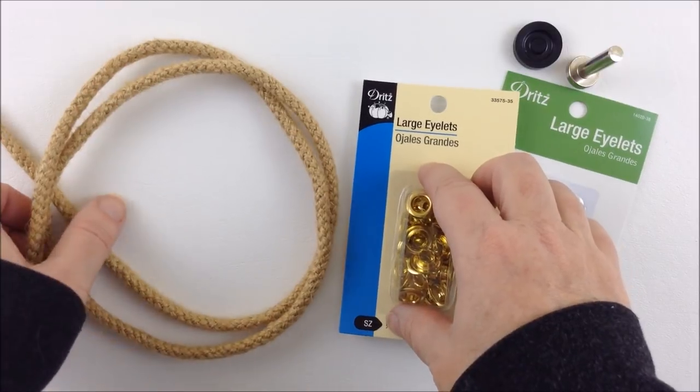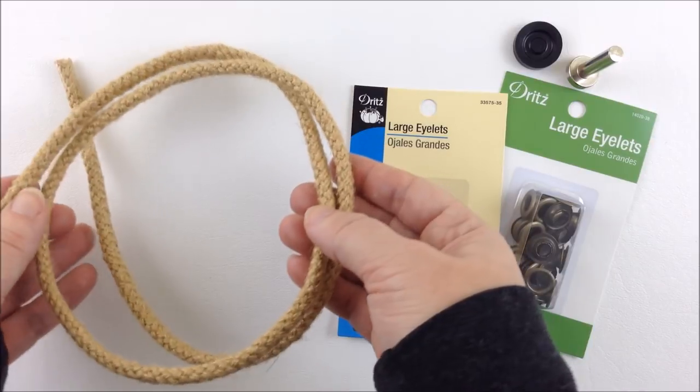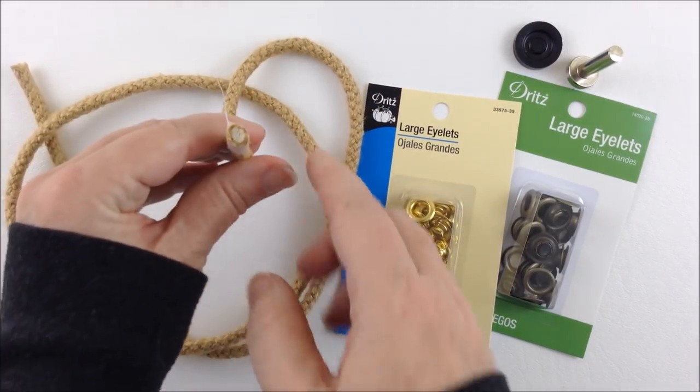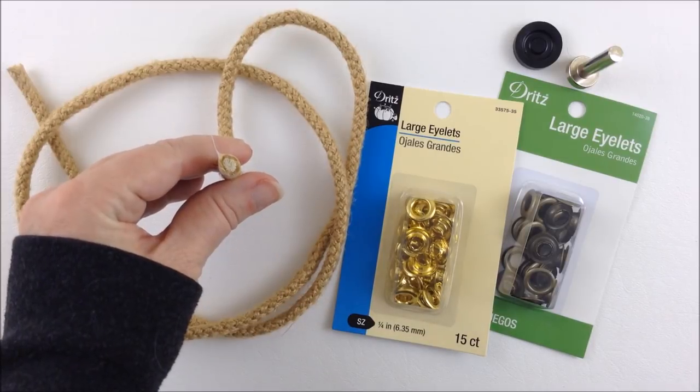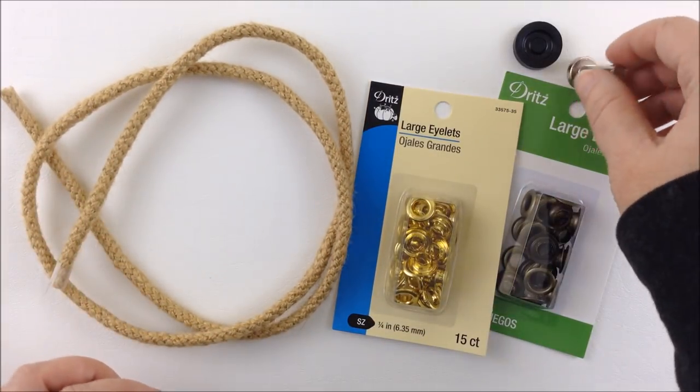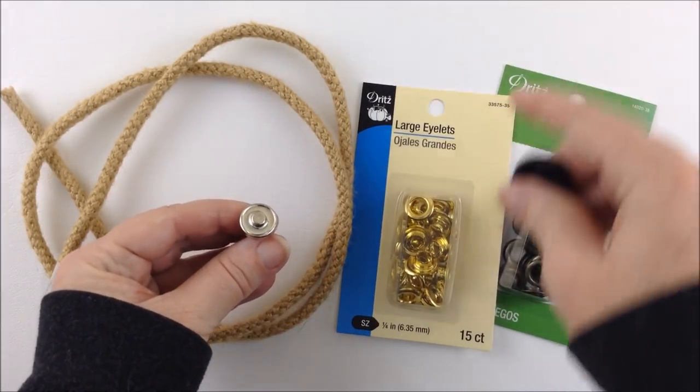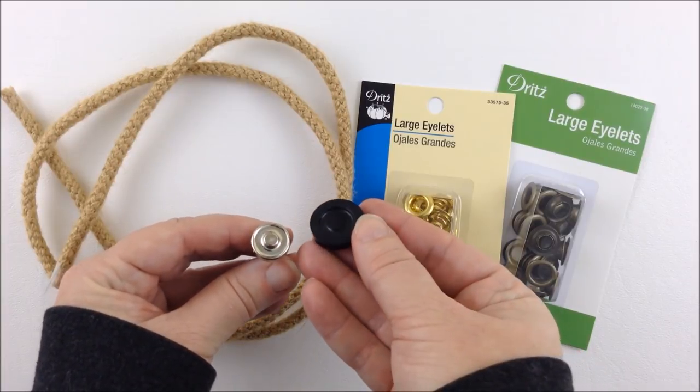Then you're going to need some cord or some rope about half a yard or half a meter, and again the diameter needs to match the eyelet which in this case is quarter inch or six millimeters. If you've never set an eyelet before you're going to need a setting tool and when you buy these eyelets sometimes you can buy it with the setting tool.